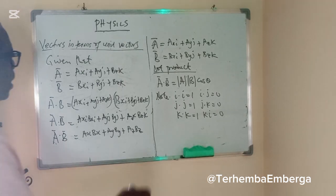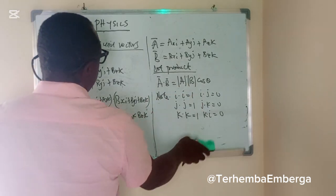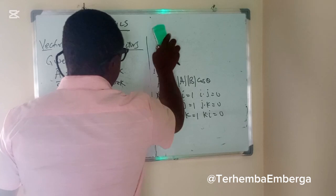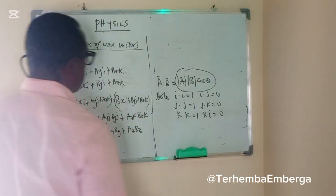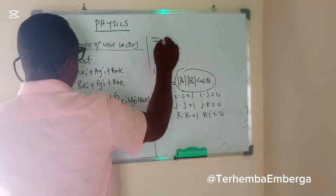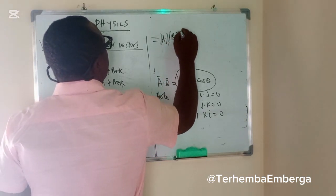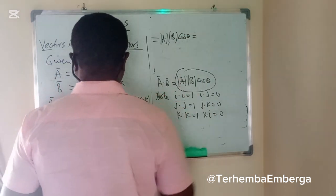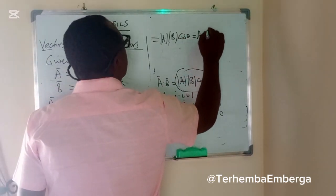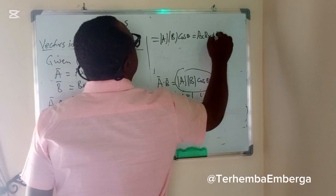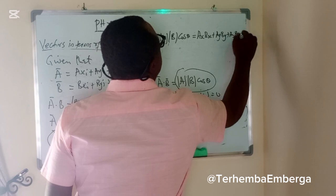Remember, from here we said that A dot B is equivalent to this. We can represent this as, remember this is equivalent to this. So we can write this equation as modulus of A modulus of B cosine theta is equal to this. This becomes AX BX plus AY BY plus AZ BZ.